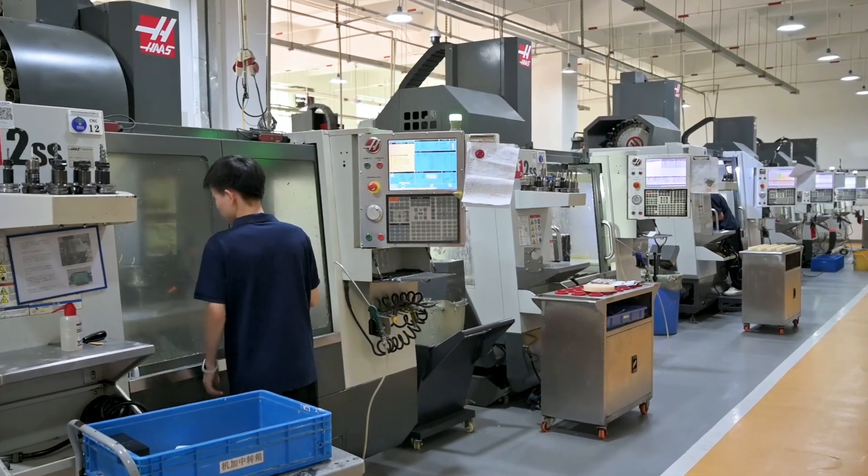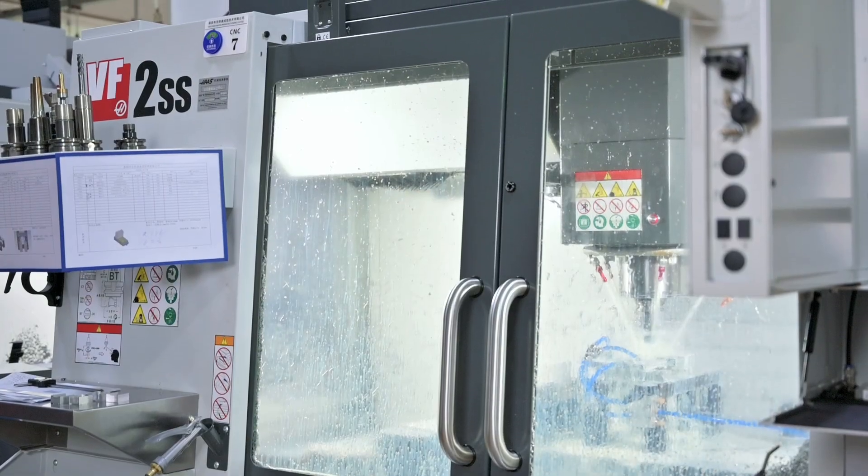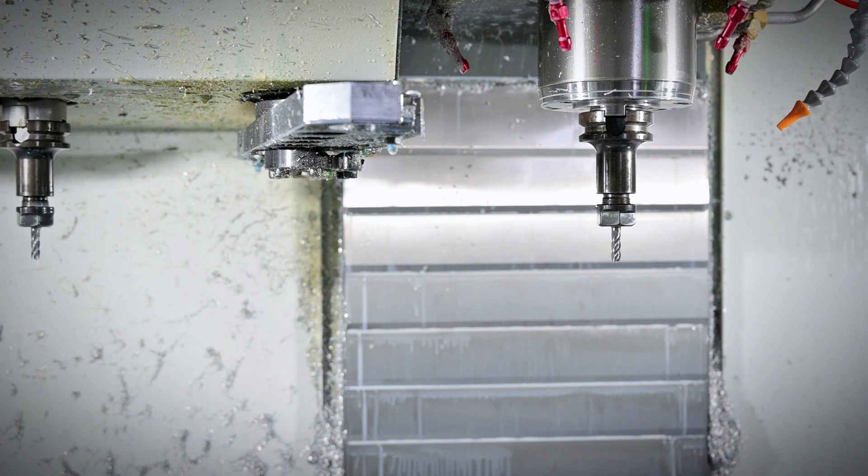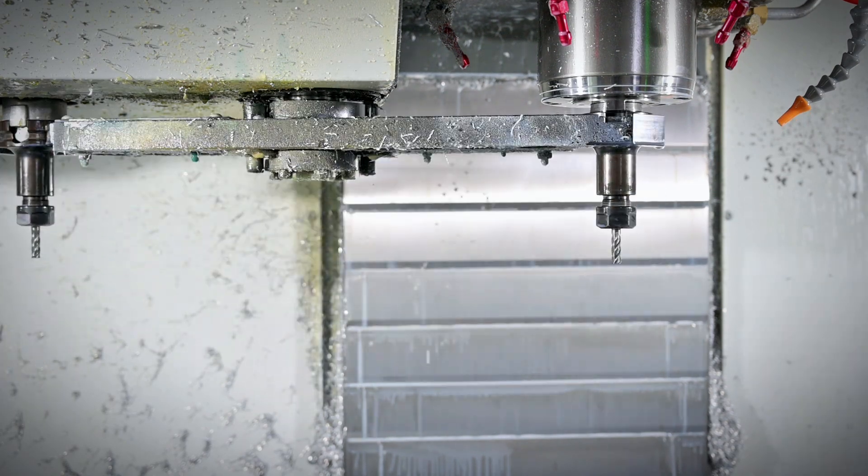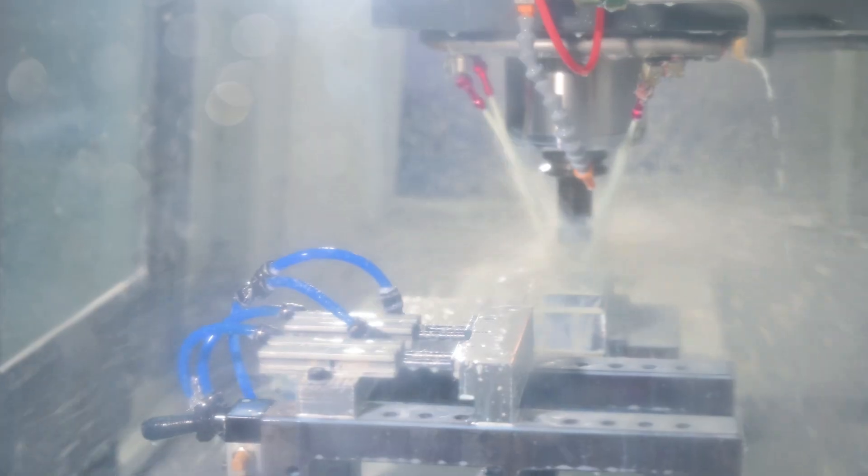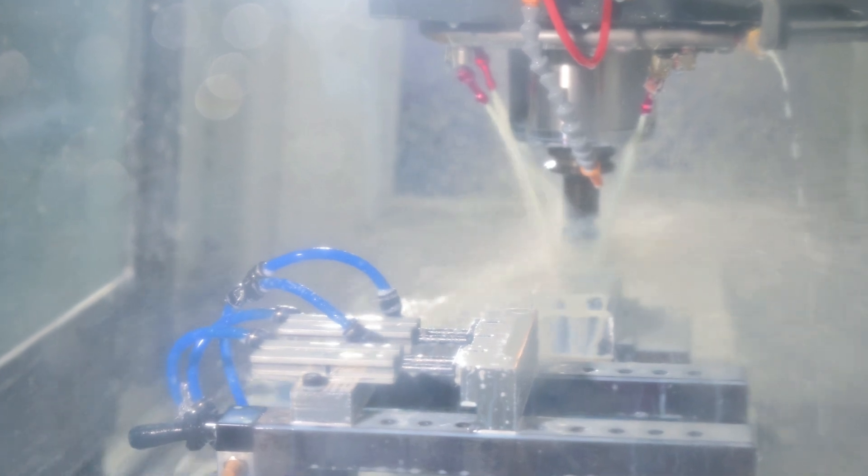This is the Haas VF2SSV vertical machining center with high spindle speed, fast tool changes, and fast motions. It's the ideal choice for high volume production. I have this part here and the customer has ordered 500.